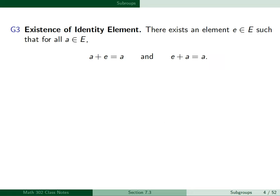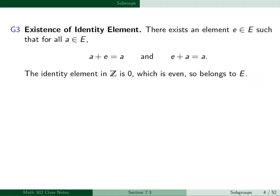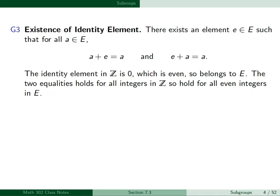Next, G3, the existence of an identity element. There exists an element E in the set E such that for all elements A in E, A plus E equals A and E plus A equals A. The identity element in Z is zero, which is even, so belongs to E. The two equalities hold for all integers in Z, so they hold for all even integers in E. Therefore, E satisfies G3.